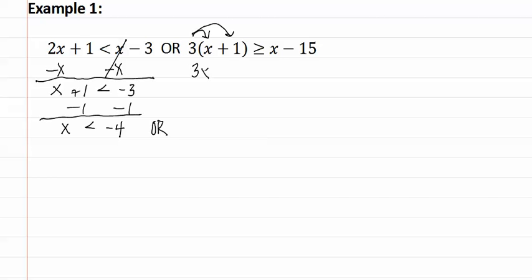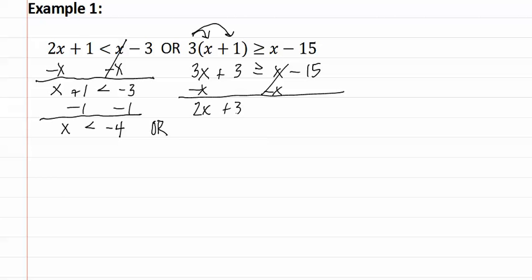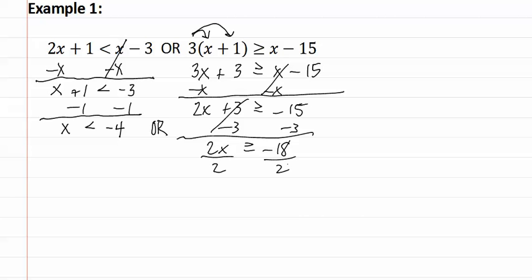Distributing gives us three x plus three is greater than or equal to x minus fifteen. We continue solving by subtracting x from both sides, giving us two x plus three is greater than or equal to negative fifteen. We then subtract three from both sides, giving us two x is greater than or equal to negative eighteen. Dividing both sides by two gives us x is greater than or equal to negative nine. We now have our two answers.